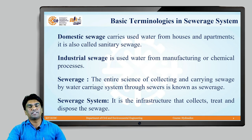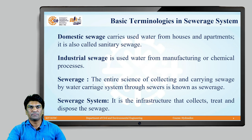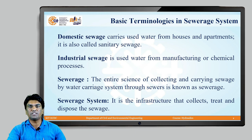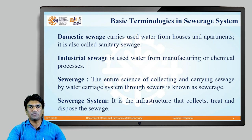Domestic sewage carries used water from houses and apartments and is also known as sanitary sewage. Industrial sewage is the used water from manufacturing or chemical processes. Sewerage is the entire science of collecting and carrying sewage by a water-carry system through sewers. And the sewerage system is the infrastructure that collects, treats, and disposes of sewage.